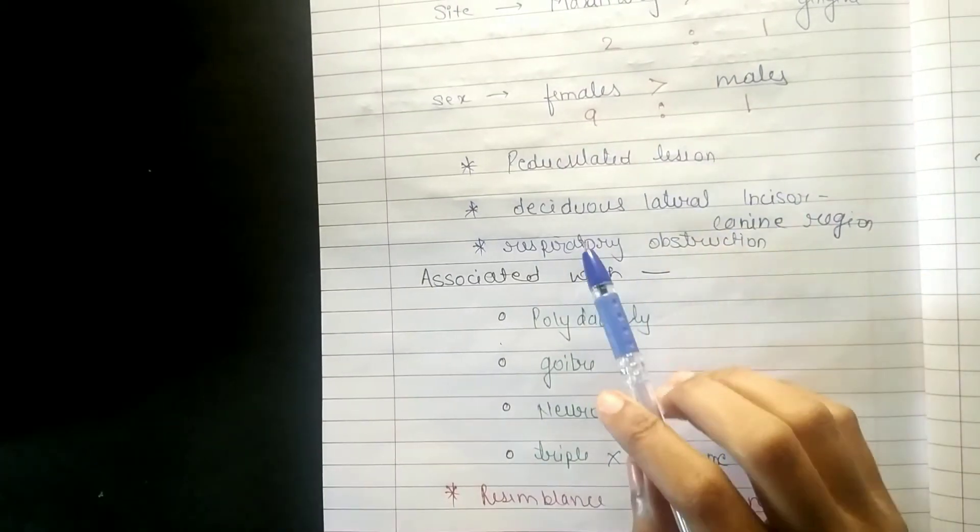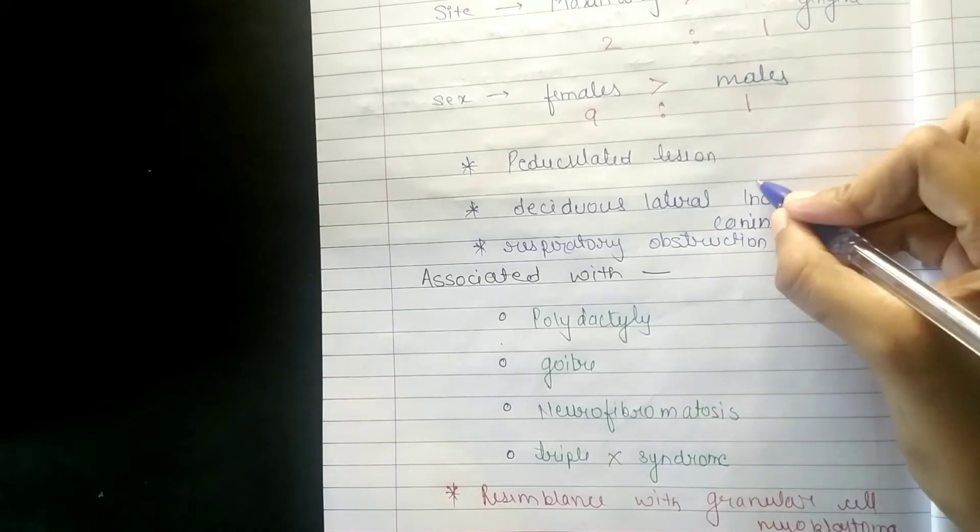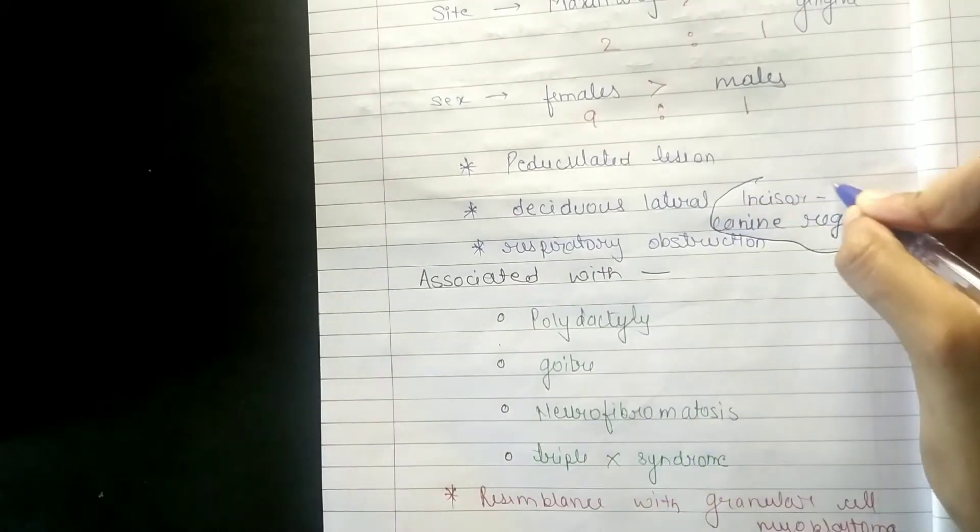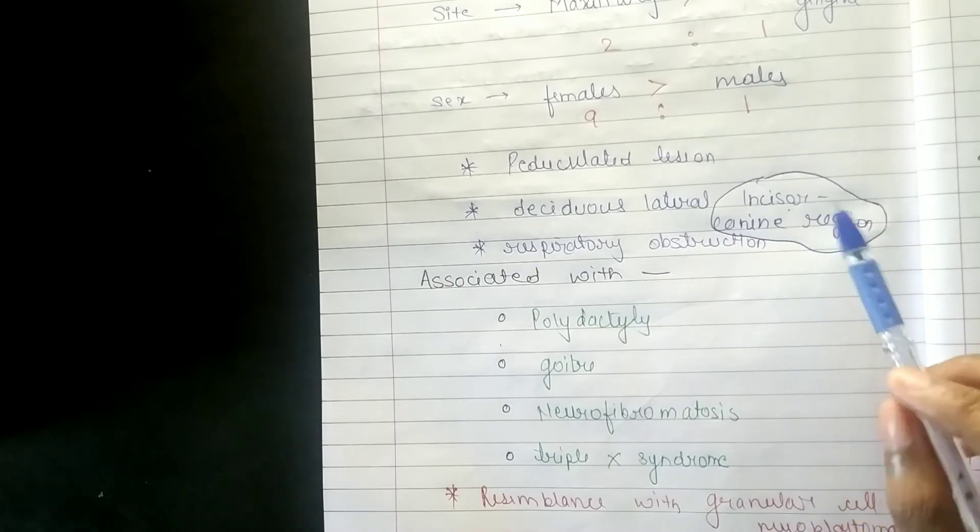Pedunculated lesions are seen in the deciduous lateral incisors and canine region. You can see this lateral incisors and canine region.